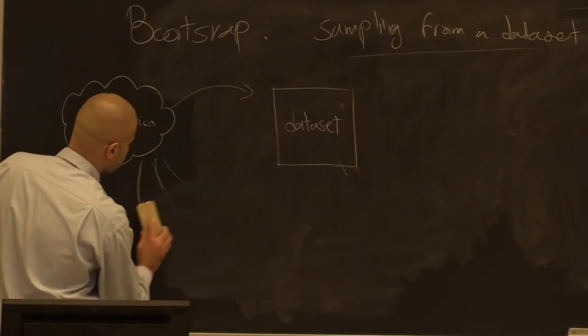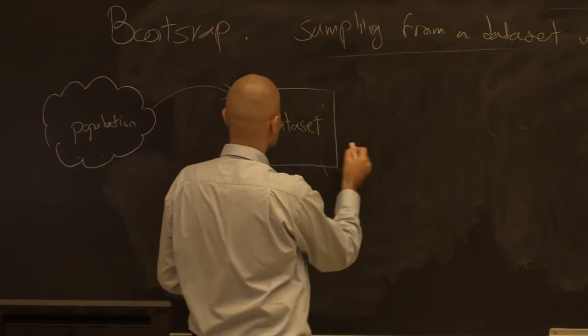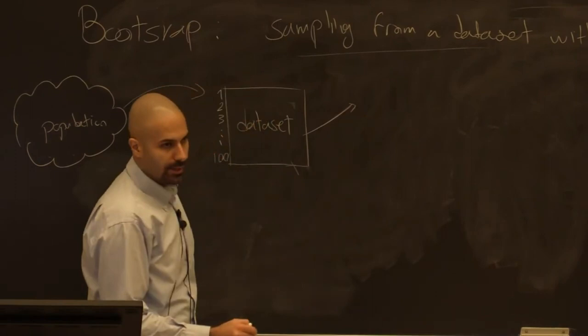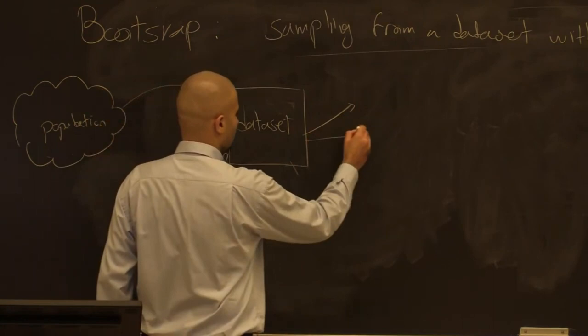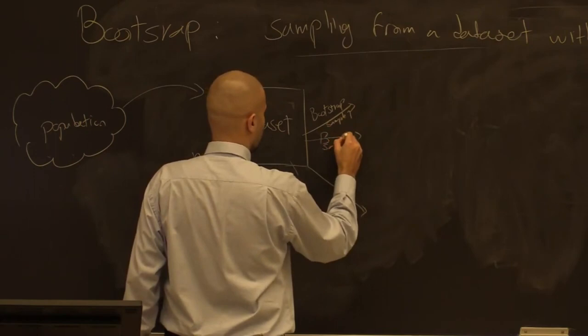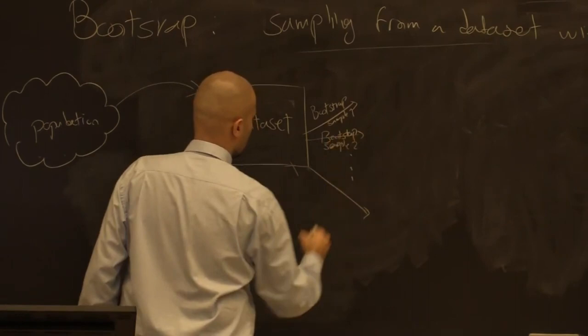So what we're going to do is improvise. Instead of sampling from the population, we sample from the dataset with replacement. This is the dataset — row one, row two, row three, all the way to row 100. We sample with replacement, and if n is 100, we get n samples. We call this bootstrap sample one, bootstrap sample two, all the way to bootstrap sample n, or 100.